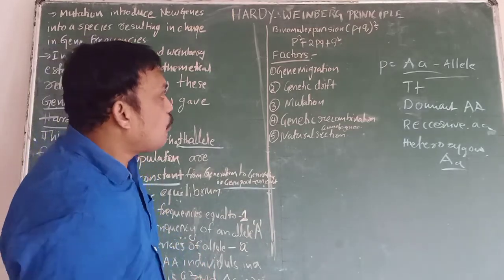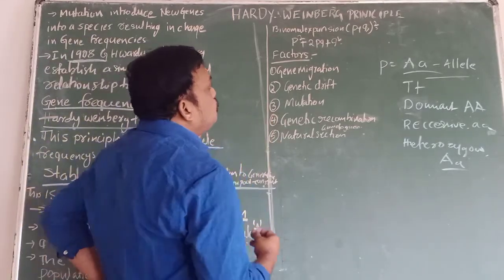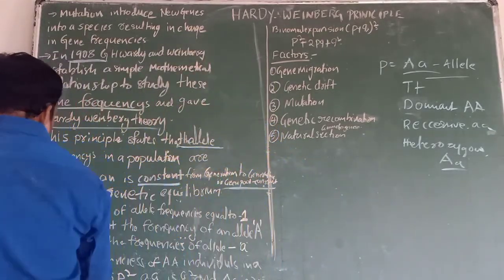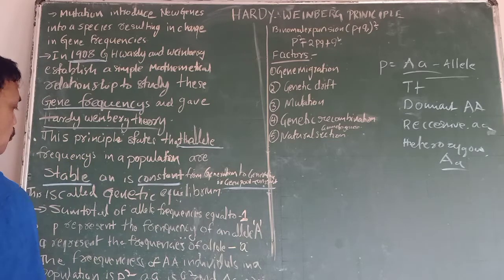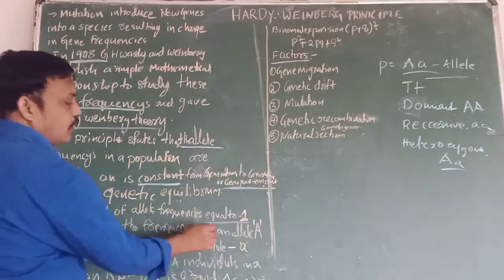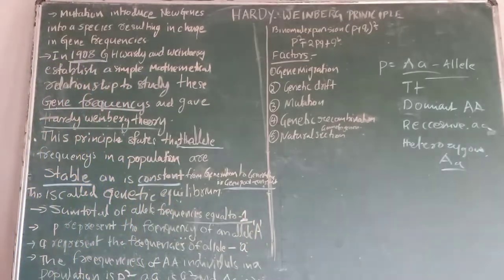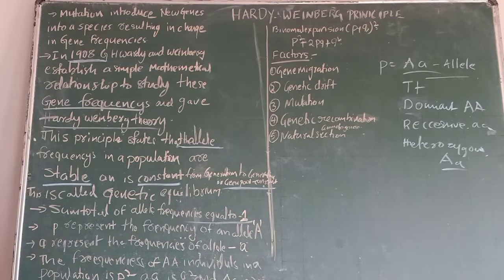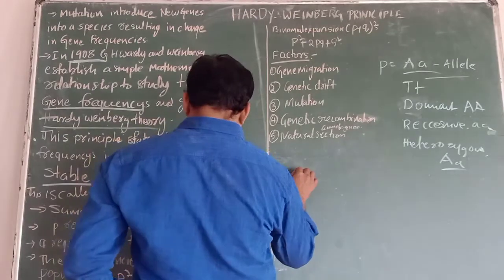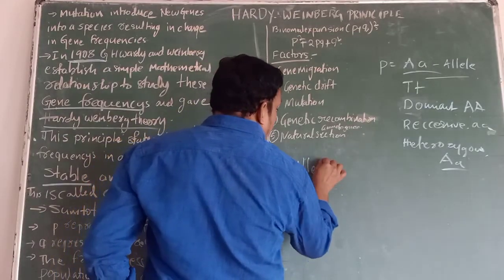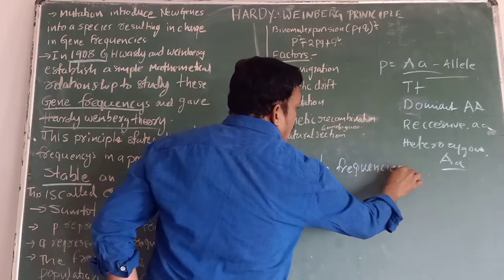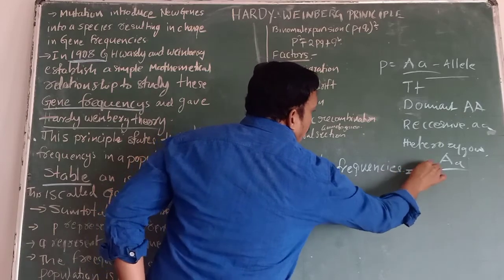As per Hardy-Weinberg, the sum total of allele frequencies is equal to one — gene equilibrium, Hardy-Weinberg equilibrium. Allele frequencies are always stable and equal to one.